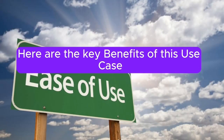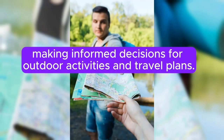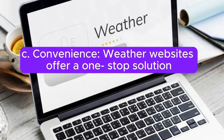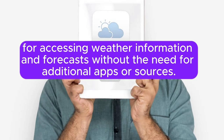Here are the key benefits of this use case. A. Weather awareness: users can stay informed about current conditions and forecasts, making informed decisions for outdoor activities and travel plans. B. Safety: the availability of severe weather alerts helps users prepare for and respond to dangerous weather events. C. Convenience: weather websites offer a one-stop solution for accessing weather information and forecasts without the need for additional apps or sources.